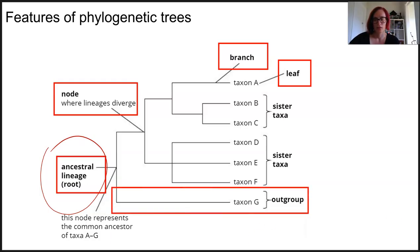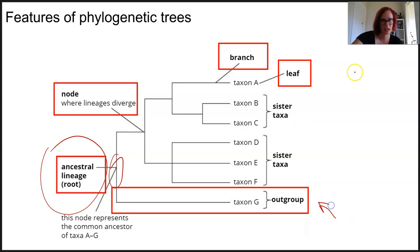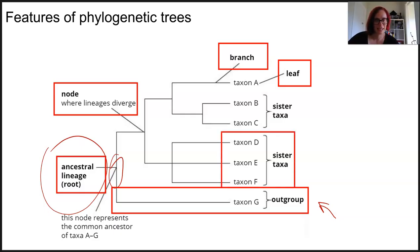An outgroup is included but is less likely to be closely related to the rest. It's included to show a common ancestor that is older, linking all the in-groups, and to give a comparison to infer evolutionary relationships distantly. Sister taxa — such as D, E and F, or B and C — are pairs grouped together that are most closely related because they share a very close common ancestor.